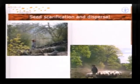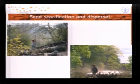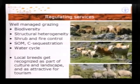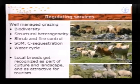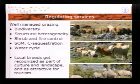A lot of plant seeds need scarification through passage of the digestive tract of animals to be able to germinate. The coats of animals transport seeds through landscapes, thereby connecting genetics across landscapes. Regulating services are mostly related to well-managed grazing lands where livestock maintain structural heterogeneity of vegetation, contribute to shrub and fire control, increase soil organic matter, and can contribute to carbon sequestration and positive effects on water cycles. Local breeds also get recognized as an important part of culture and landscapes, attractive for tourism.